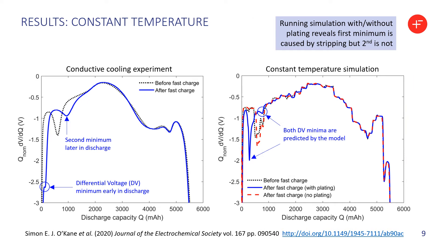Putting those into the model, on the left is the experiment where the surface temperature was kept constant and on the right is the simulation. In both cases there are results before and after the fast charge. The simulation gives the additional luxury of being able to turn plating on and off at will. The red dashed line is where plating is turned off after the fast charge. The model is able to predict both differential voltage minima when plating is enabled, and when plating is disabled it looks very similar to the result before the fast charge.